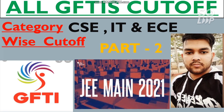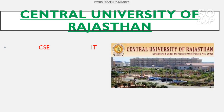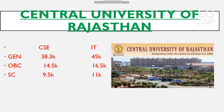Let's start the video. First is the GFTI — Central University of Rajasthan. Here is the category-wise cutoff for CS and IT; this college does not have an EC branch. For General: 38,300 (CS) and 45,000 (IT). For OBC: 14,500 and 16,500. For SC: 9,500 and 11,000. For ST: 3,200 and 4,800. For EWS: 7,000 and 8,300. If you want to know how much marks or percentile you need to get these ranks, watch the video on marks vs. percentile vs. category rank.